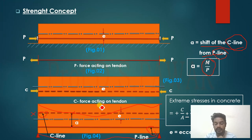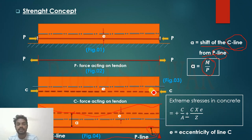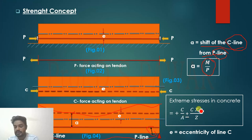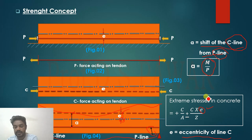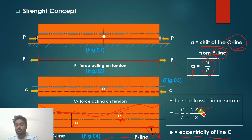The moment on the beam from self-weight or external load is wL²/8, and P is the prestressing force. The extreme stresses in the beam are calculated using the formula: stress = C/A ± C·e/Z, where C/A is the direct stress and C·e/Z is the bending stress. Here 'e' is the eccentricity of the C-line, which is the distance of the C-line from the centroidal axis (CG). Remember: you must take 'e' as the eccentricity of the C-line, not the value of 'a' directly.